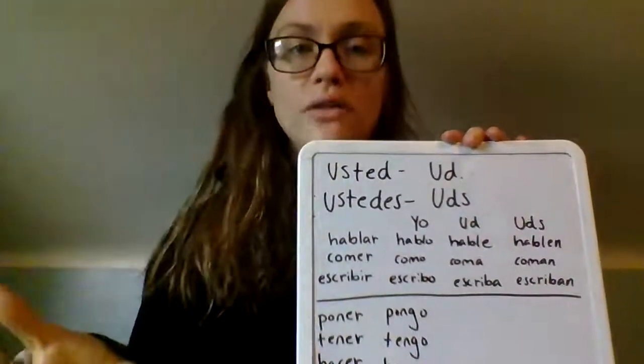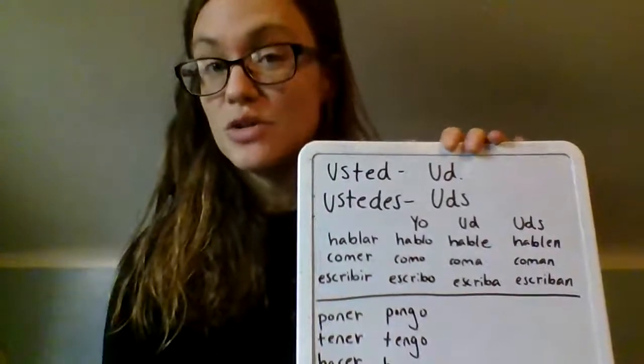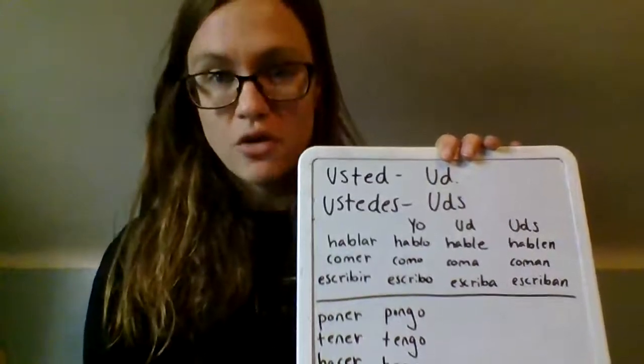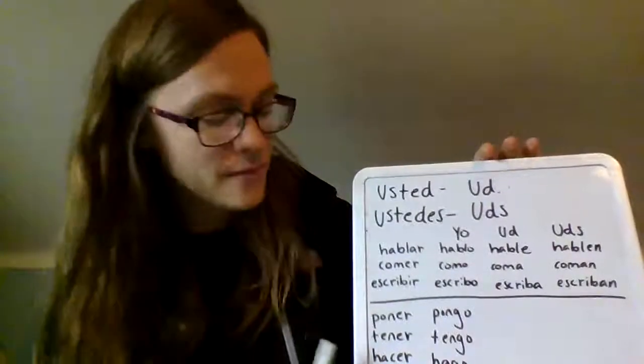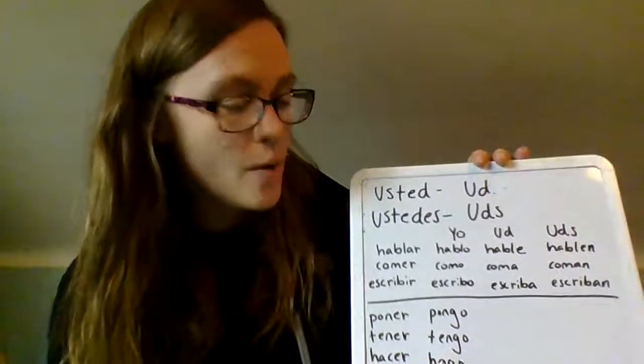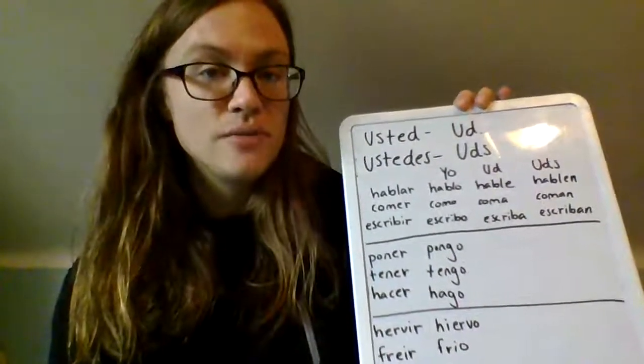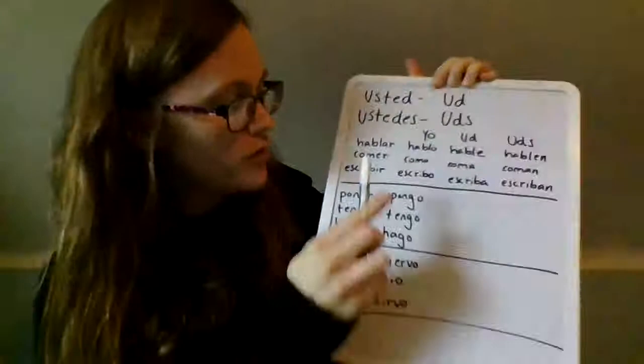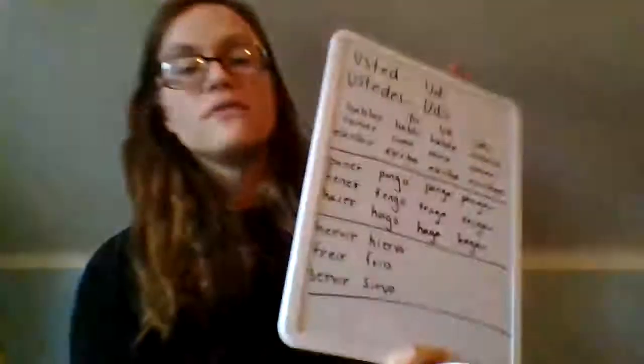Why do we put it in the yo form first? Some verbs are irregular in the yo form — for example, poner, tener, and hacer. Poner means to put or place, tener means to have, and hacer means to do. In the yo form, they are pongo, tengo, and hago. Because they are irregular, they take irregular forms in the command. They are all ER verbs, so we give them an A or AN ending: ponga or pongan for poner, tenga or tengan for tener, and haga or hagan for hacer.